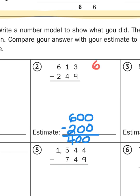Now, watch what I do here. And see if this doesn't look familiar to you. 613 minus 249. 3 minus 9 is 6. 1 minus 4 is 3. And 6 minus 2 is 4.